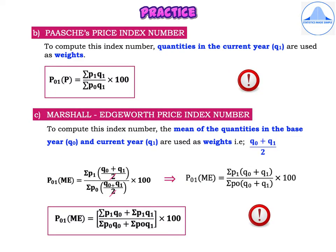The second is Paasche's Price Index Number. To compute this, quantities in the current year, Q1, are used as weights. Start with summation P1 divided by summation P0 and multiply numerator and denominator by Q1 into 100. So Paasche's Price Index Number is: P01(P) = (summation P1Q1 / summation P0Q1) × 100.